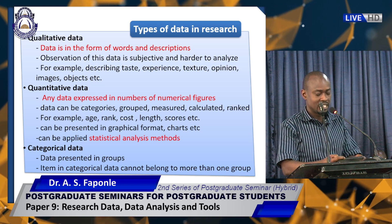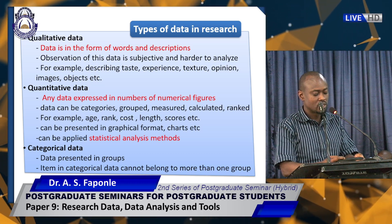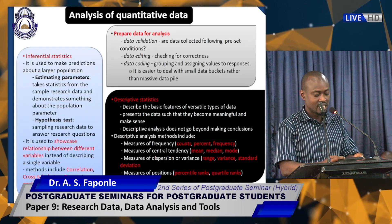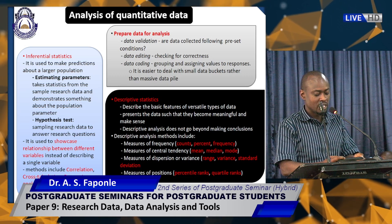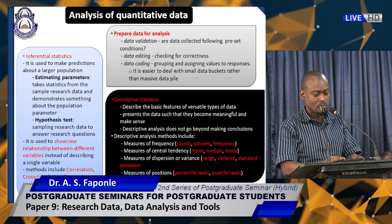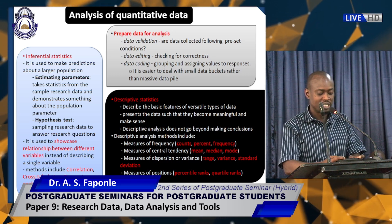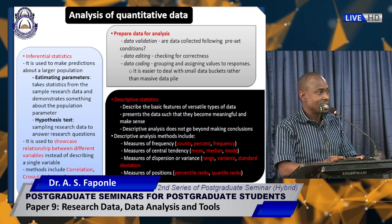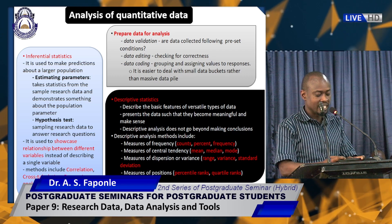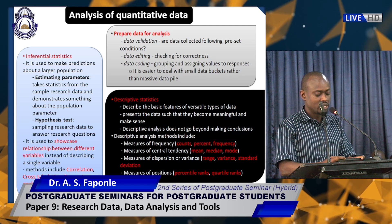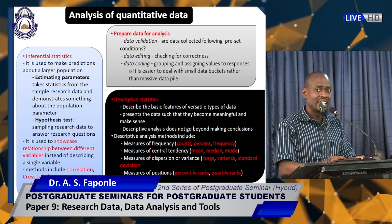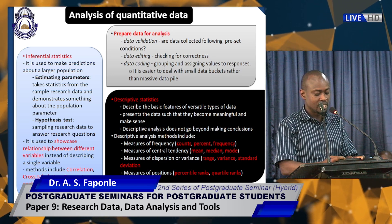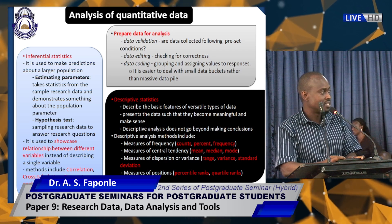When we get our data, the first thing is to prepare the data for analysis. We validate the data — ensuring that those data are obtained following preset conditions. After that, we do data editing, checking for correctness. Then we can do data coding, which is grouping and assigning values to responses, because it is easier to deal with small pockets rather than massive data.